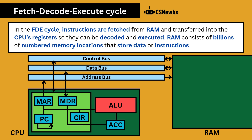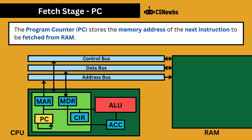RAM consists of billions of numbered memory locations that store data or instructions. The first thing to know is that the program counter, or PC, stores the memory address of the next instruction that is to be fetched from RAM.